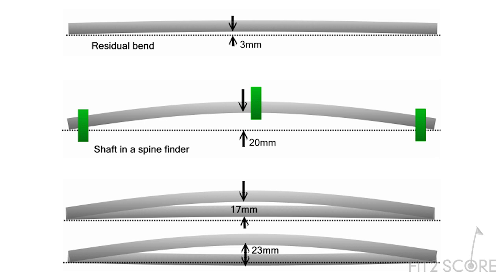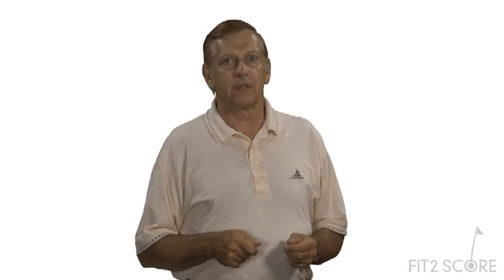In this example, the shaft has a 3 millimeter bow. When deflected 20 millimeters, in the direction of the bow, it is being bent only 17 millimeters. In the direction opposite the bow, it is being bent 23 millimeters. What our so-called spine finders are showing us is nothing more than the bow of the shaft.